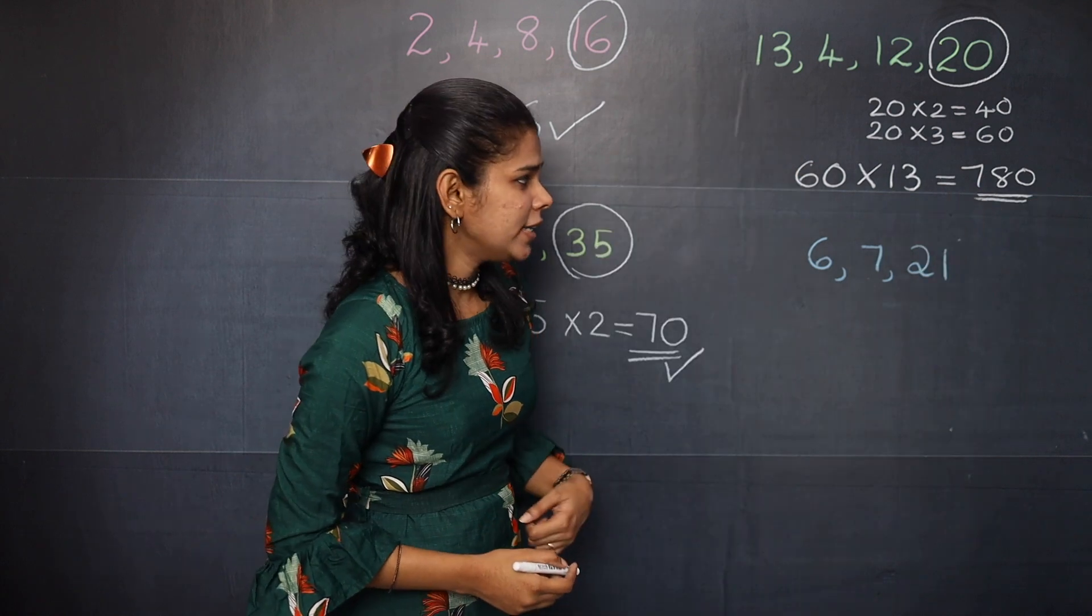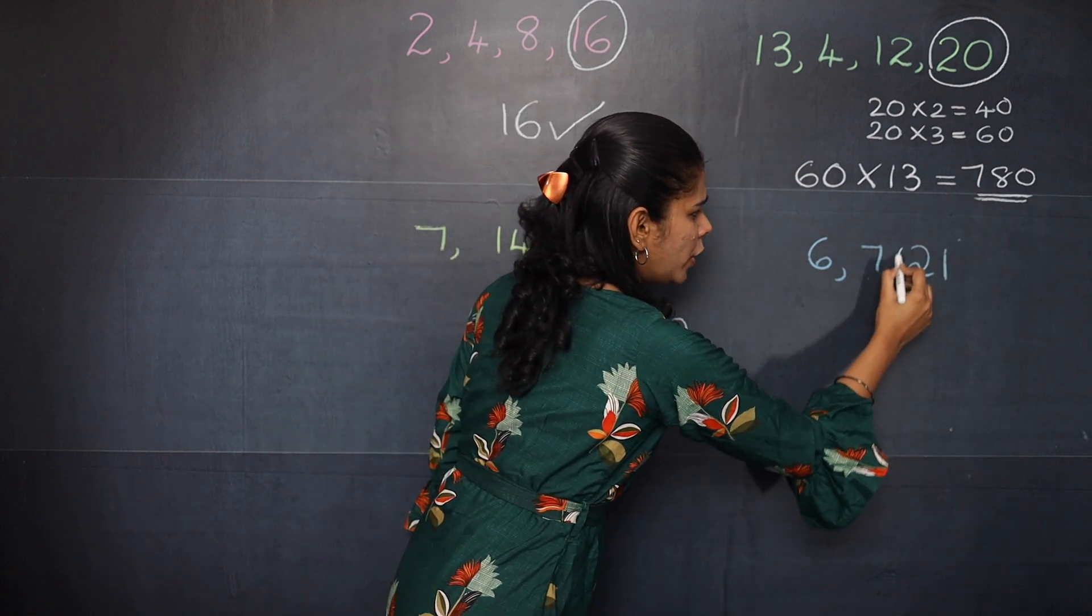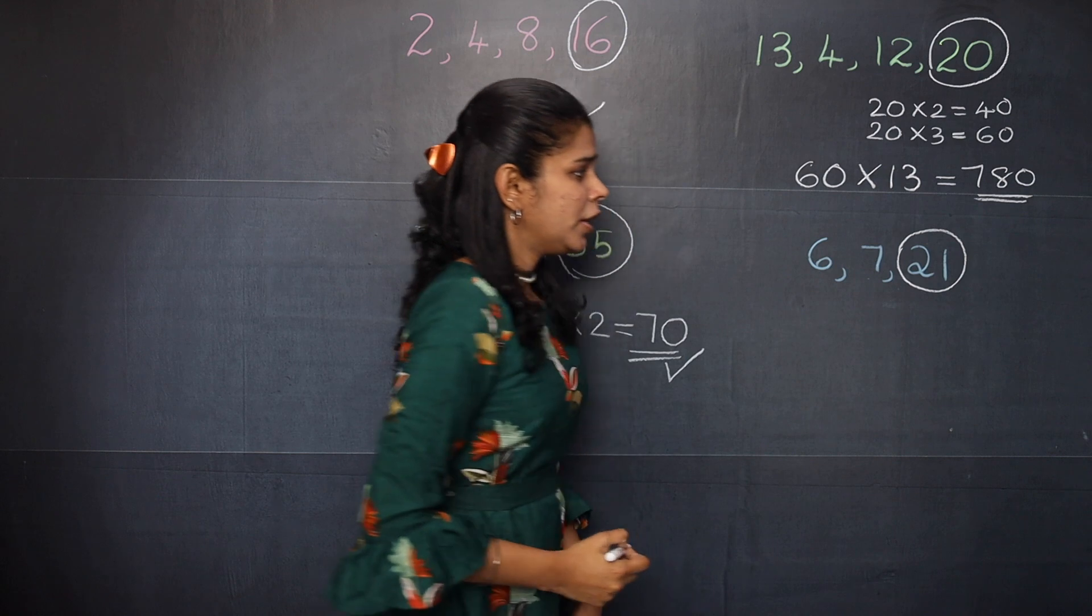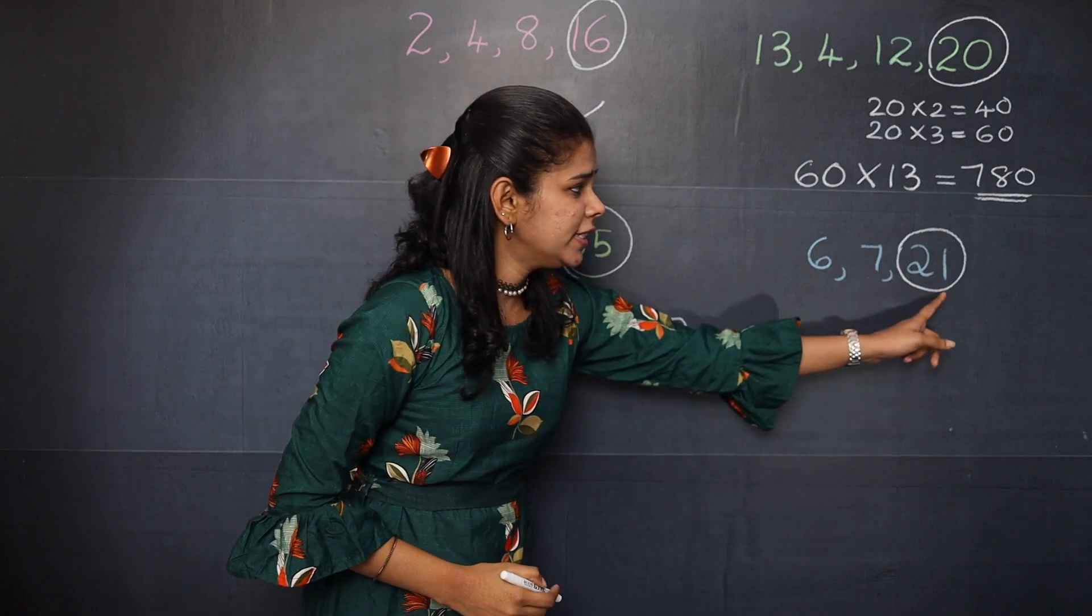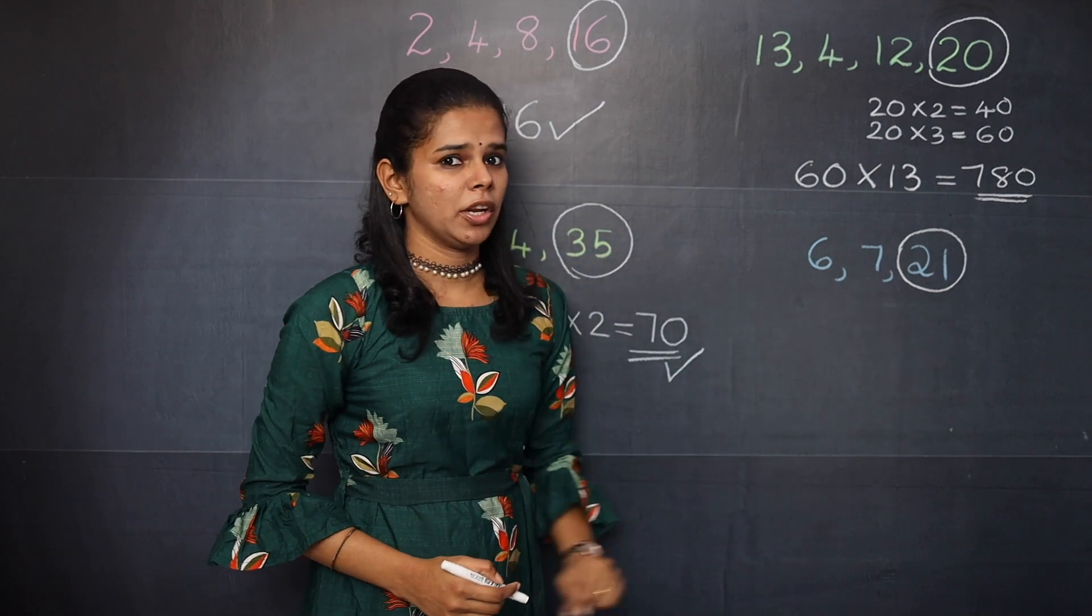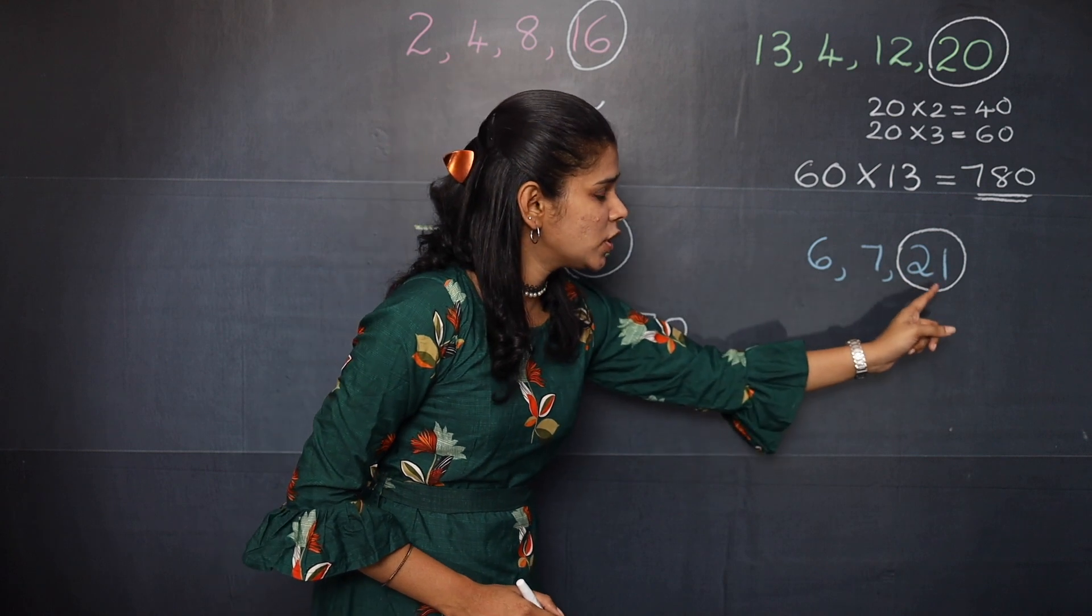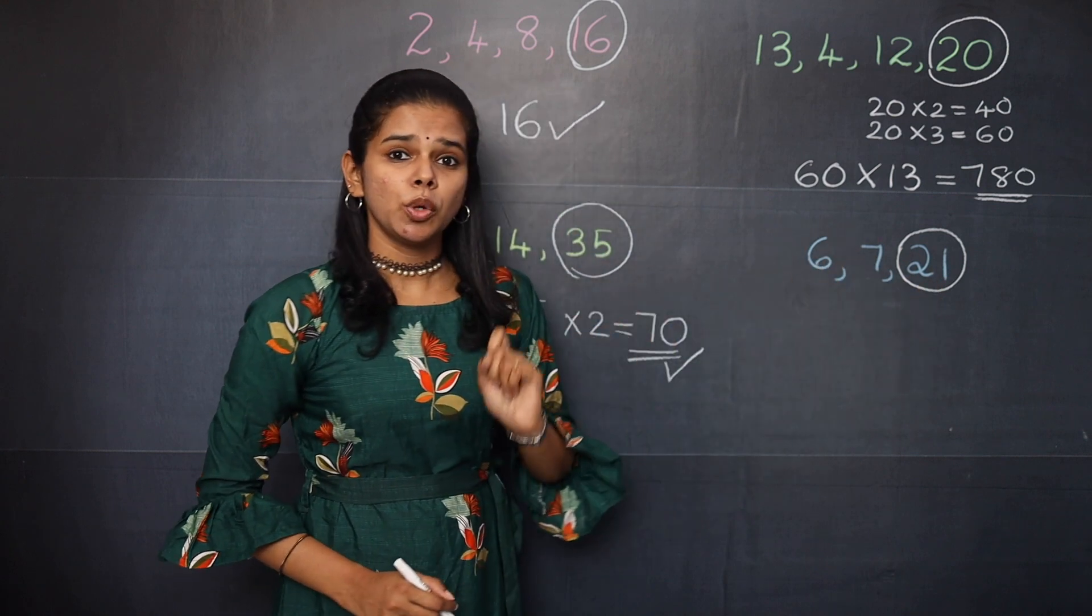Moving on to the last question, you can see that 21 is your bigger number. Now you should check whether 21 is divisible by 6 and 7. You can see that 21 is not divisible by 6. So what you should do?